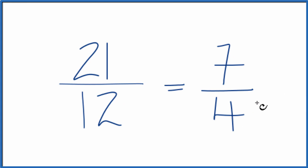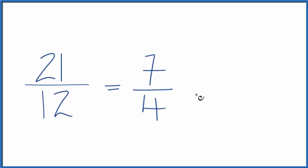This is an improper fraction, though. The numerator is bigger than the denominator. So you could convert it to a mixed number. 4 goes into 7 one time with 3 left over. And we just bring the denominator across, the 4 there.